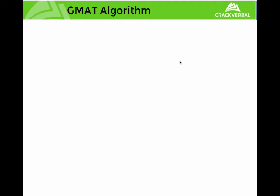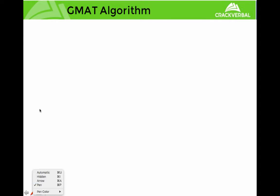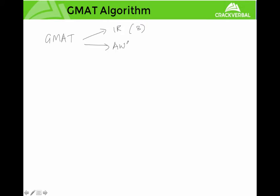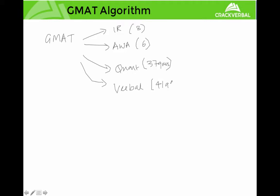A lot of students have been asking about the GMAT scoring algorithm, so I'm going to give a very simple overview of how it really works. The GMAT consists of four sections: IR which is out of 8, AWA which is out of 6, then Quant which has 37 questions, and Verbal which has 41 questions. IR and AWA don't count towards your final three-digit GMAT score — it is your Quant and Verbal scores that are used to compute your score out of 800.